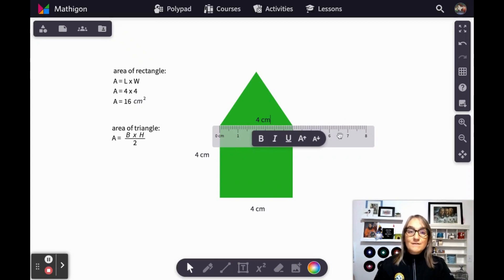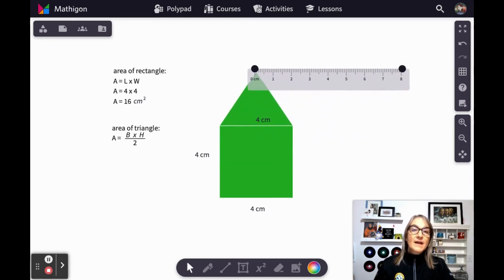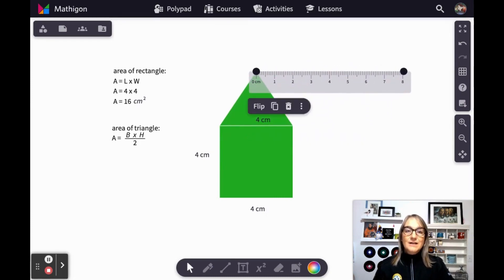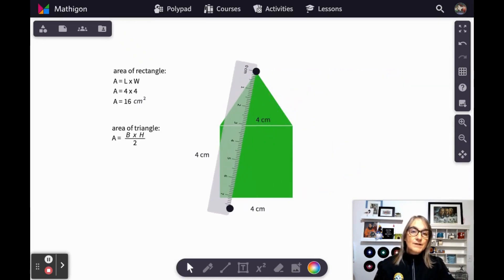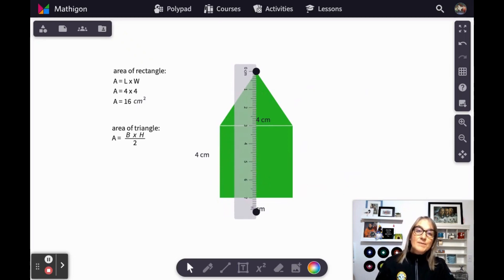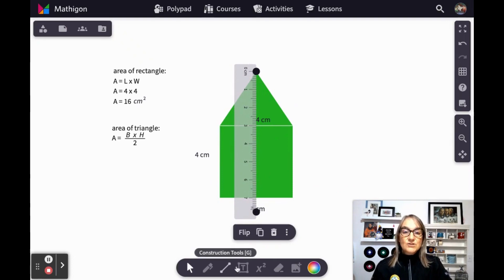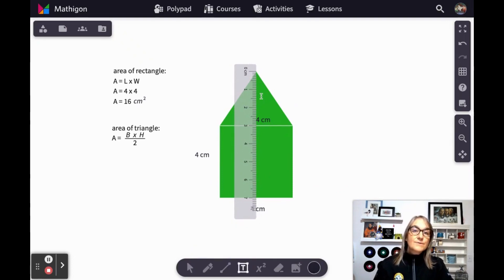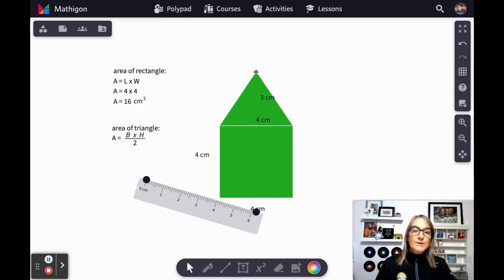Now we need to find the height. And to do that, I'm going to move the ruler and just lock it on to the vertex opposite the base, and then turn my ruler to be exactly perpendicular. And I can see that the height of this triangle is three centimeters. So I'm going to note that there.